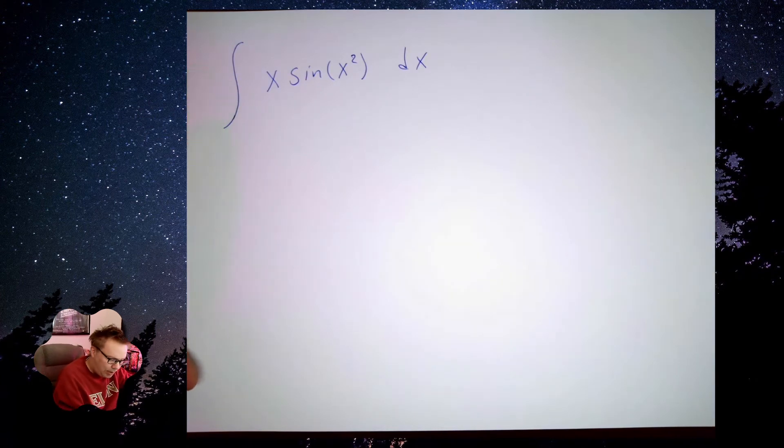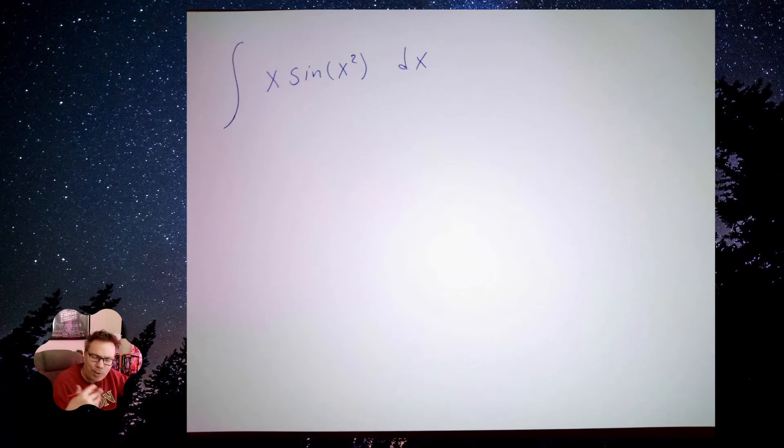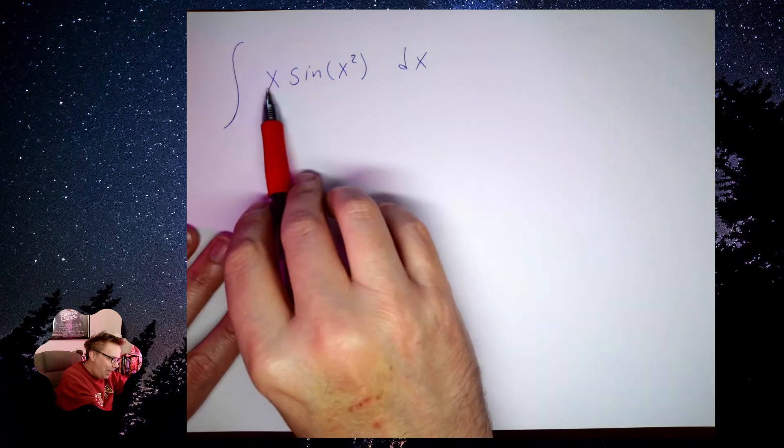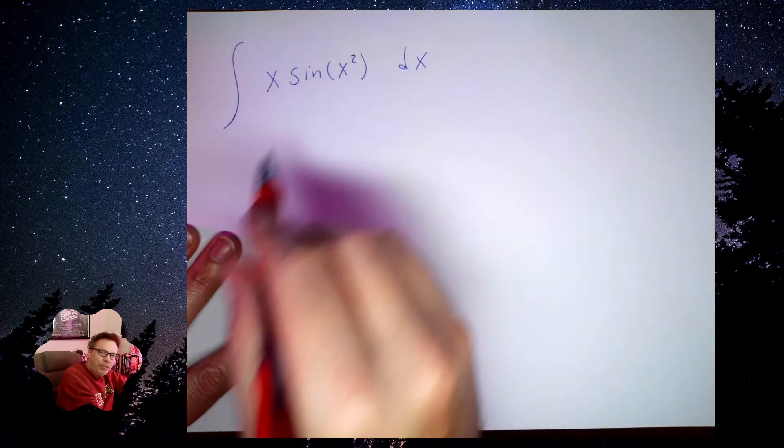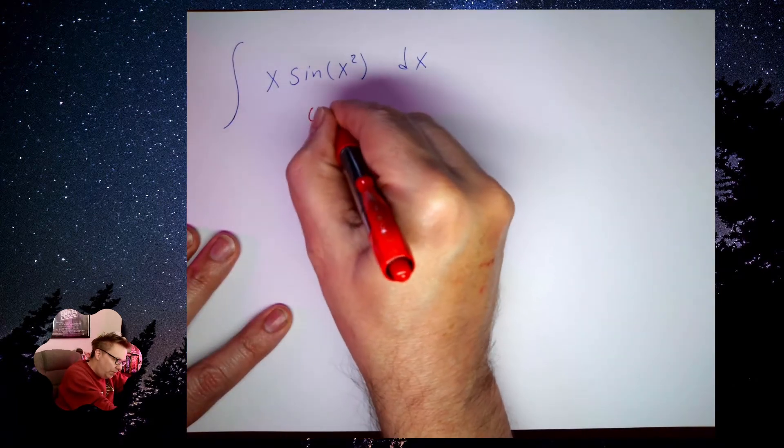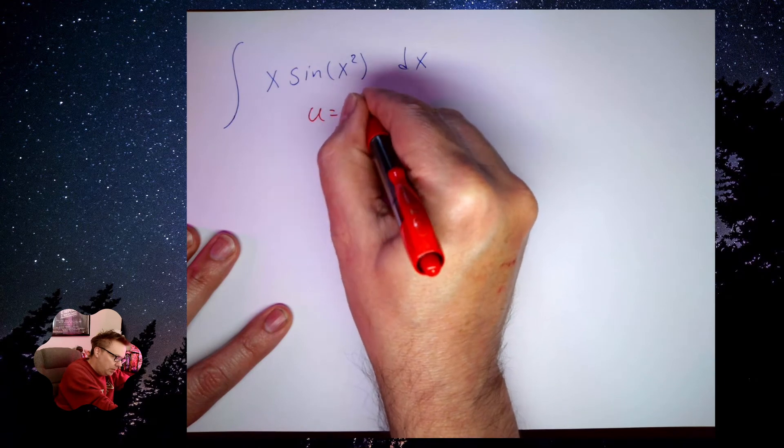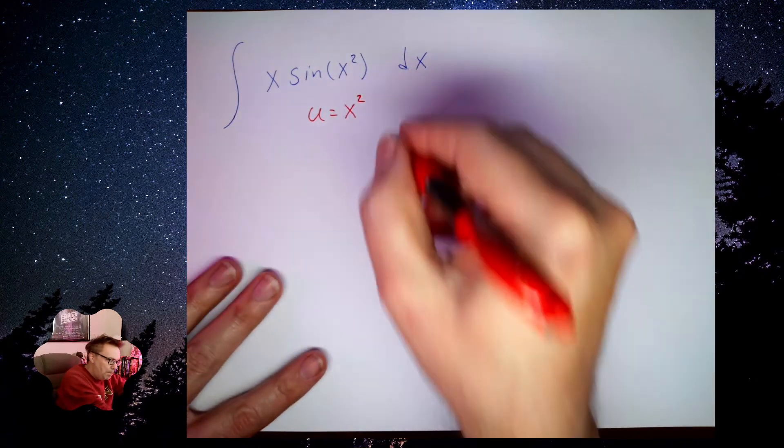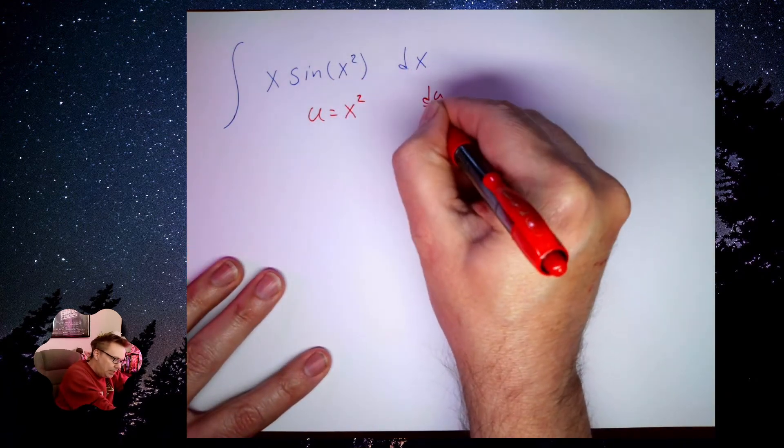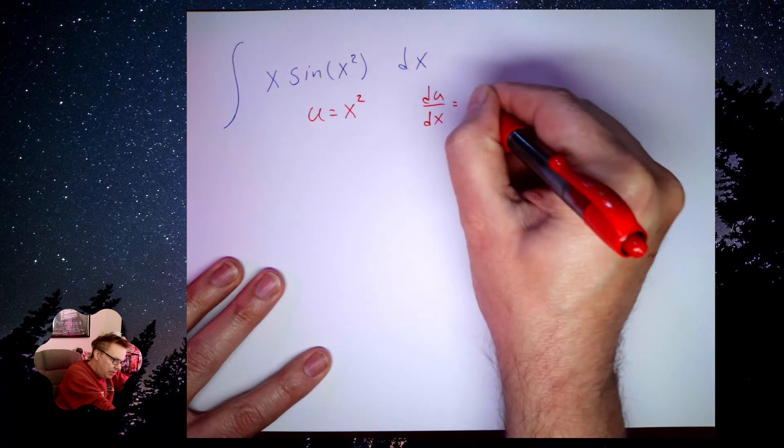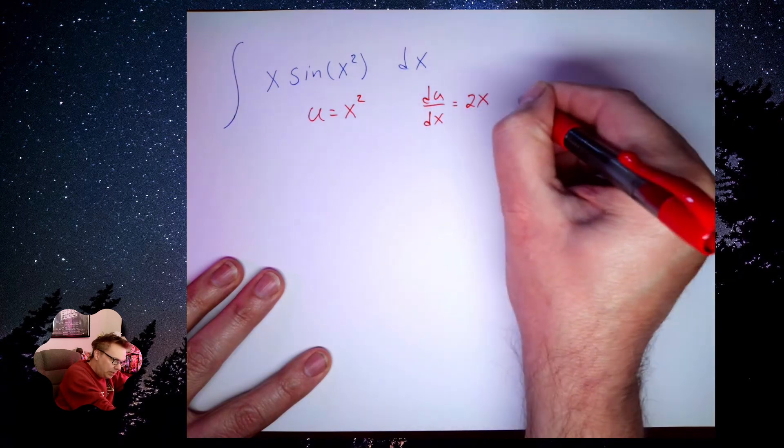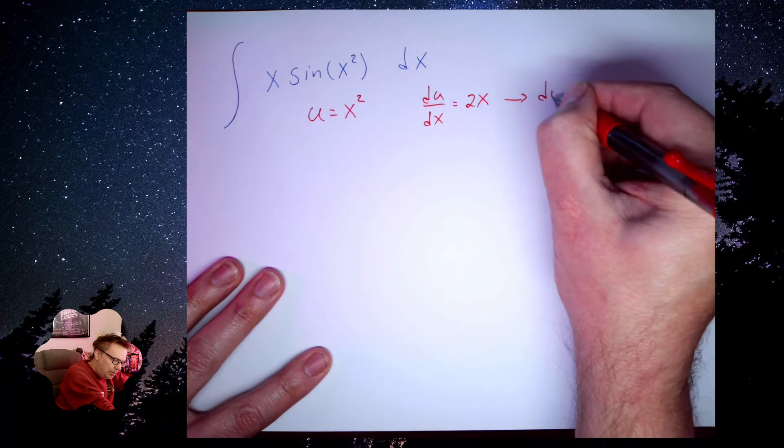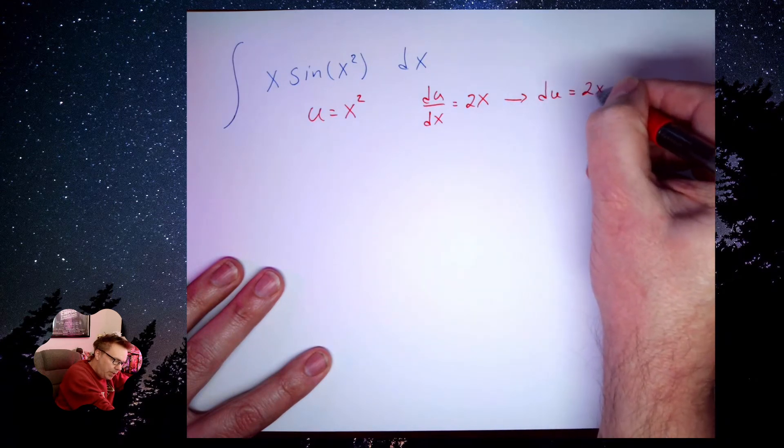Again, I'm looking at this, and here's the key thing that I like to do. Anytime I say the word of, pretty much the next thing I say is going to be the u substitution in here. x times sine of, there's my u, of x squared. du dx, this is equal to 2x. This tells me du is equal to 2x dx.